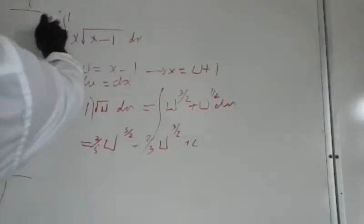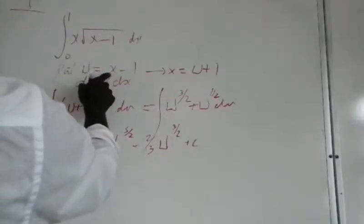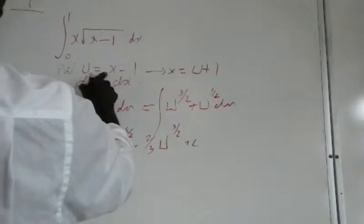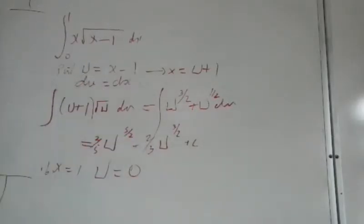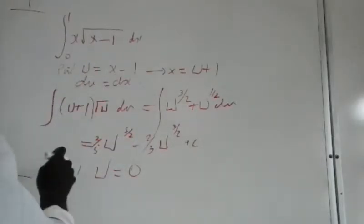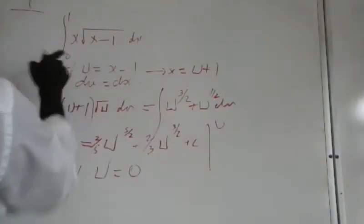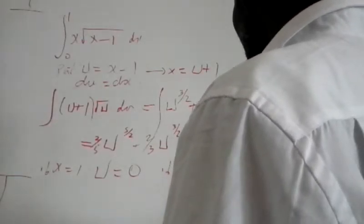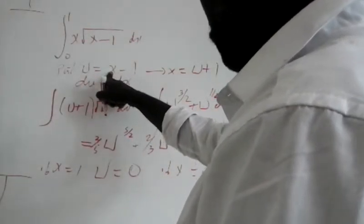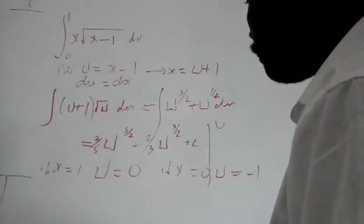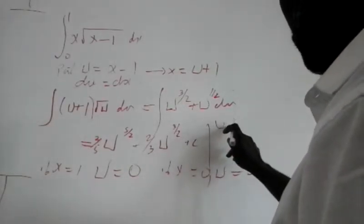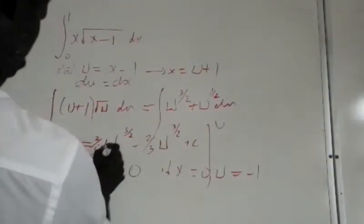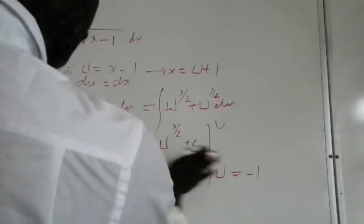We could find a new limit here by substituting. If x equals 1, then u equals 0 from this equation. So the new limit, the upper one, would be u equals 0. And if x equals 0, which is the lower limit, we put 0 here, u equals minus 1. So the new limit here is between 0 and minus 1.